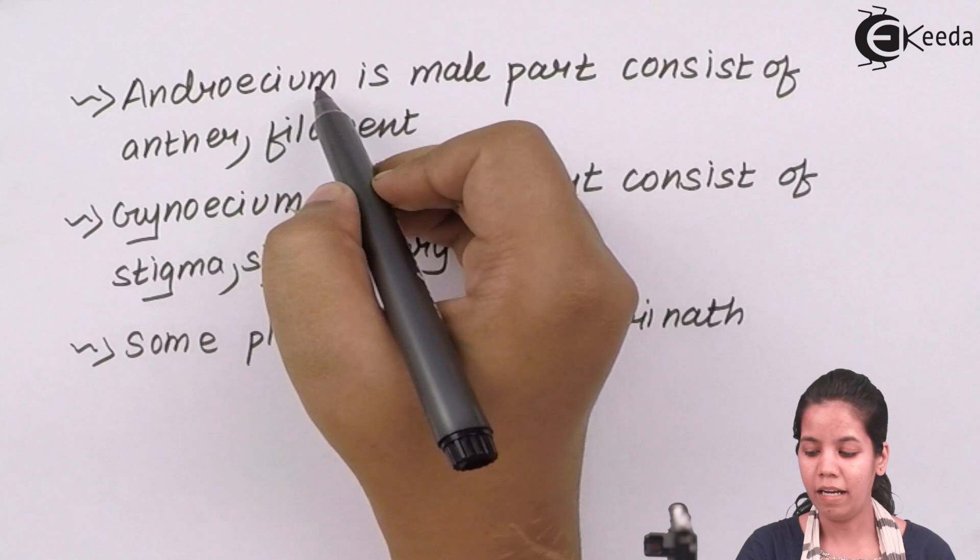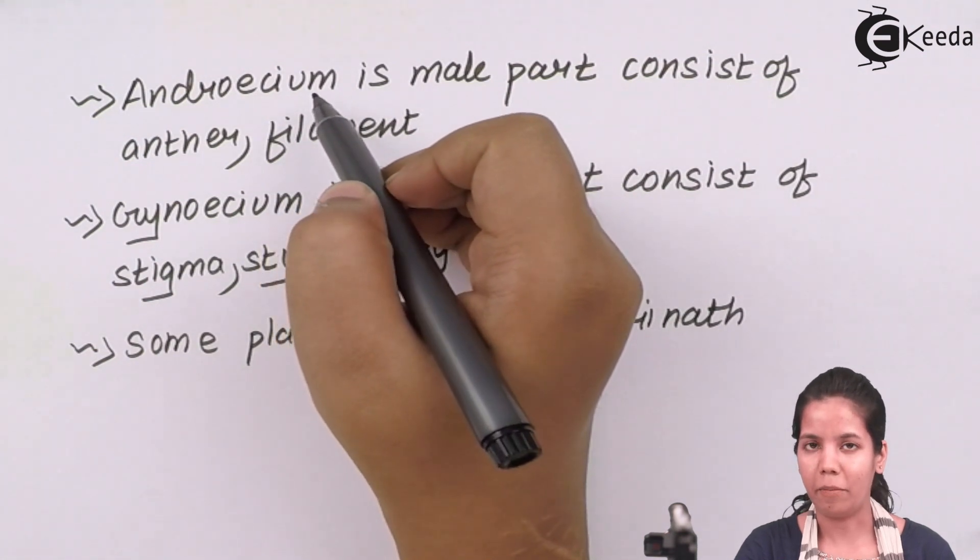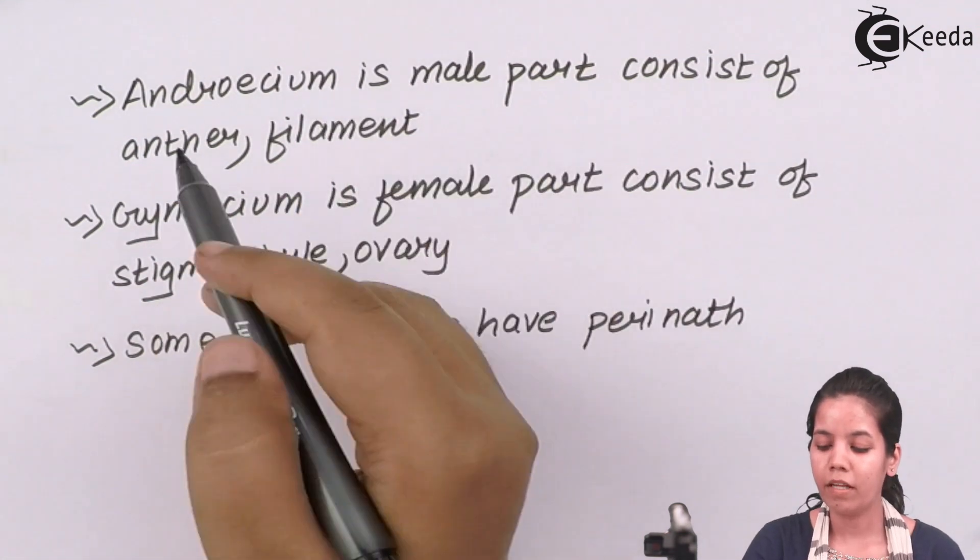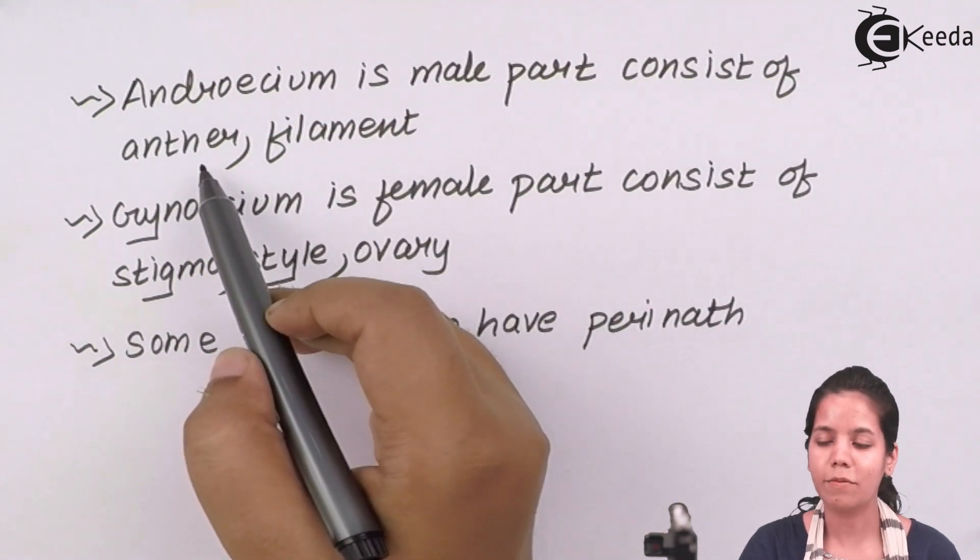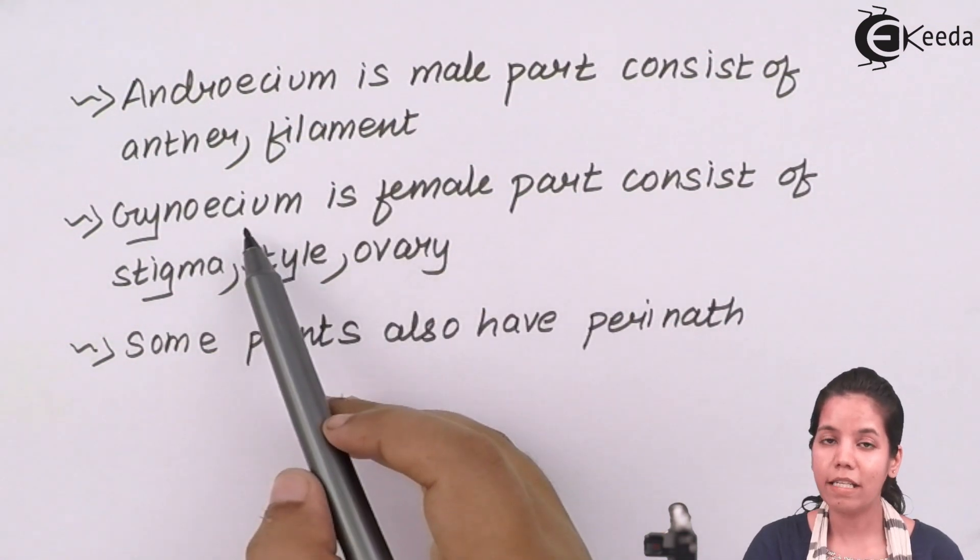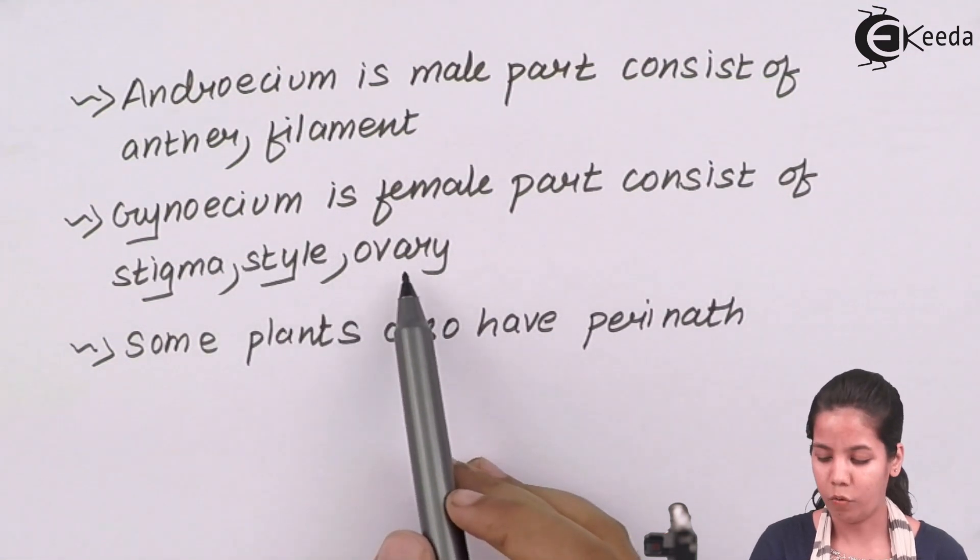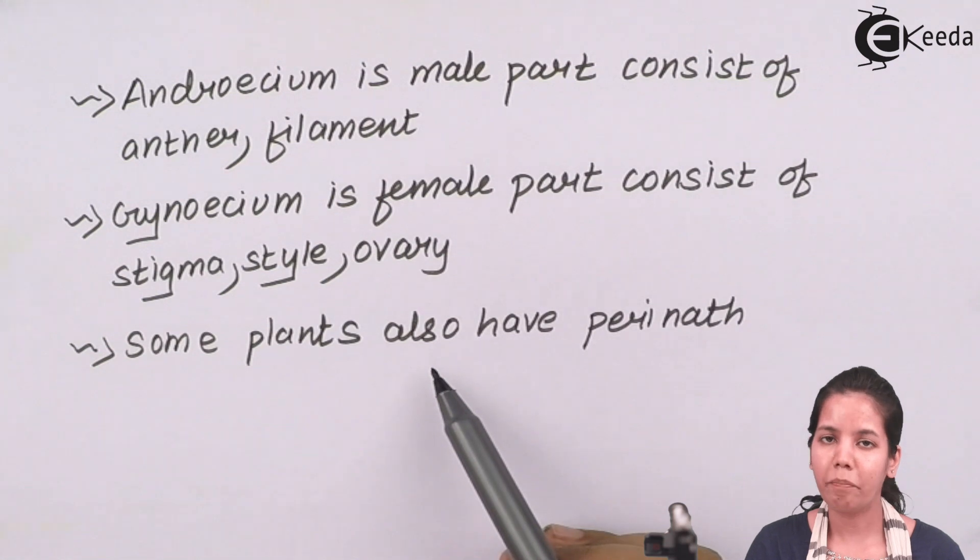Androecium, the male part. Now this male gametophyte basically consists of anther and filament. Anther contains pollen grains. Gynoecium is the female part which is divided into stigma, style, and ovary. Some plants also have a perianth region.